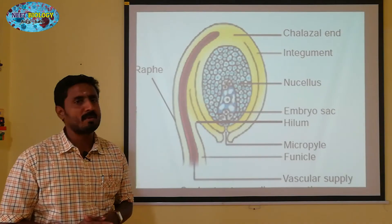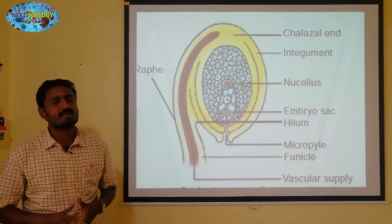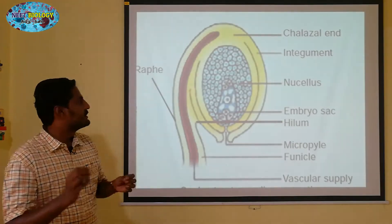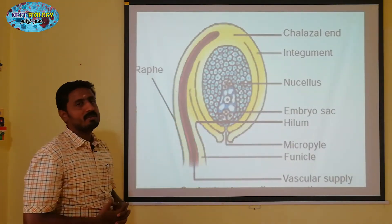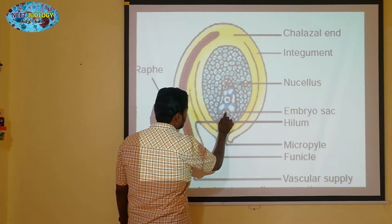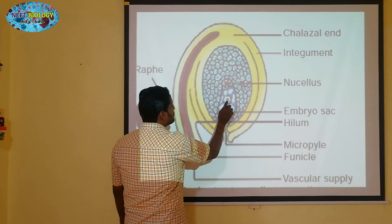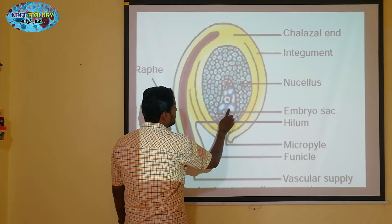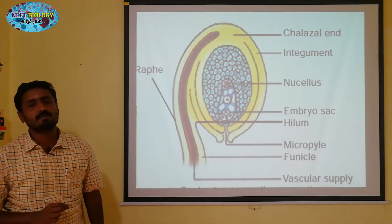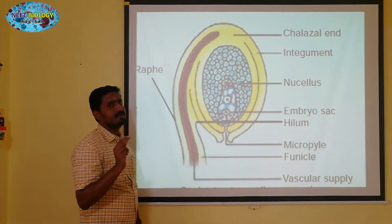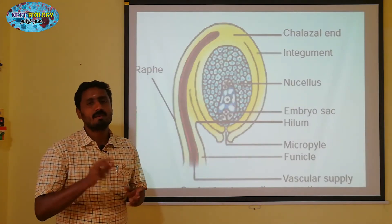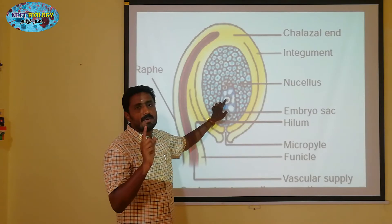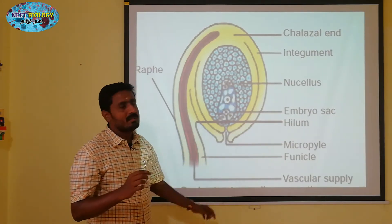First, a small introduction to endosperm. We will talk about double fertilization. This is an embryo sac. There are parts of the embryo sac, and there are two male gametes involved in the process.